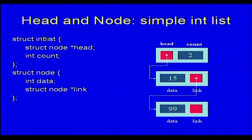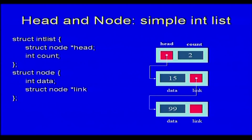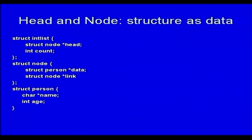So the head structure consists of count, which is an integer, and head, which is a pointer or address. The data node has a data field — which can have more than one element or even a structure — and a link, which is a pointer to the next element. These are the two structures used to define the linked list. Here you can also represent it using a person pointer to data and a node pointer to the link.